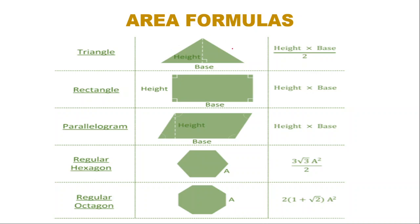The perimeter of any polygon can be found by summing the lengths of all its sides. Areas differ by shape: for a triangle it is (base multiplied by height) divided by 2; for a rectangle it is length multiplied by width. For a regular hexagon, the area formula is (3 times the square root of 3) divided by 2, multiplied by a squared, approximately 2.63 times a squared, where a is the side length. For a regular octagon, the formula is 2 times (1 plus the square root of 2) times a squared.